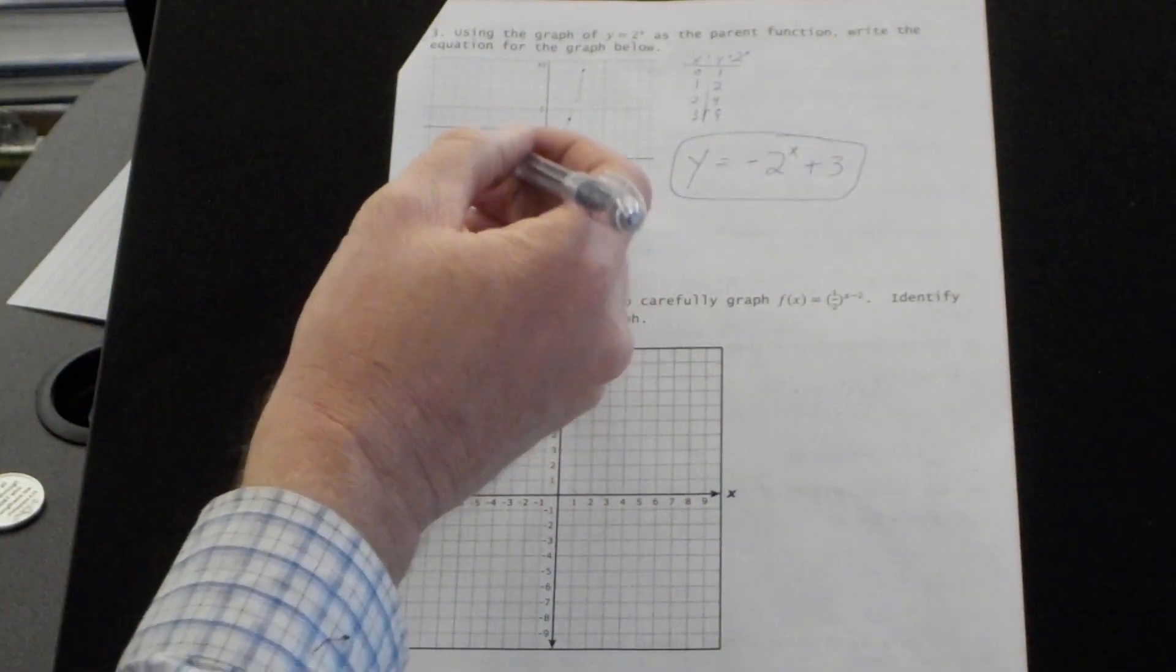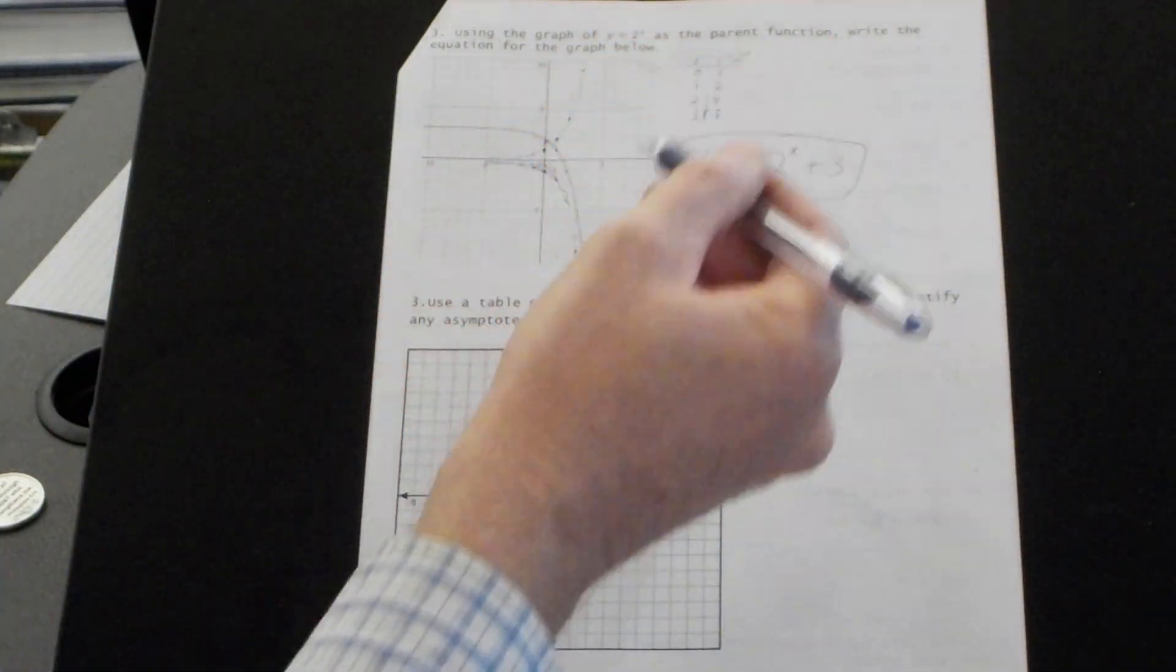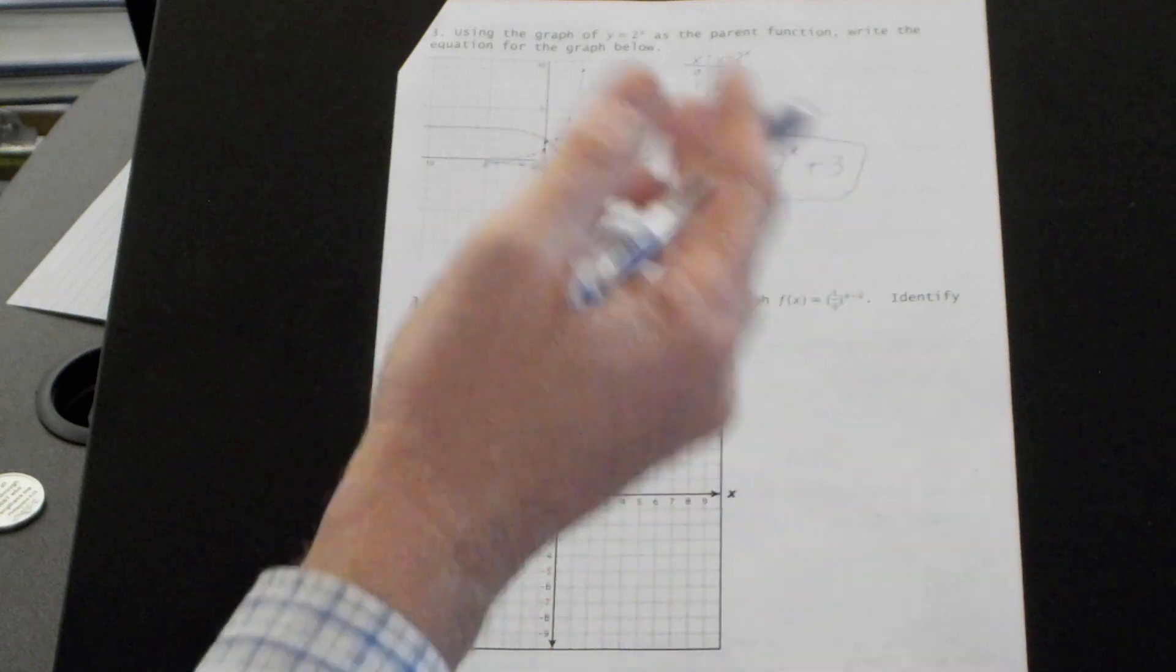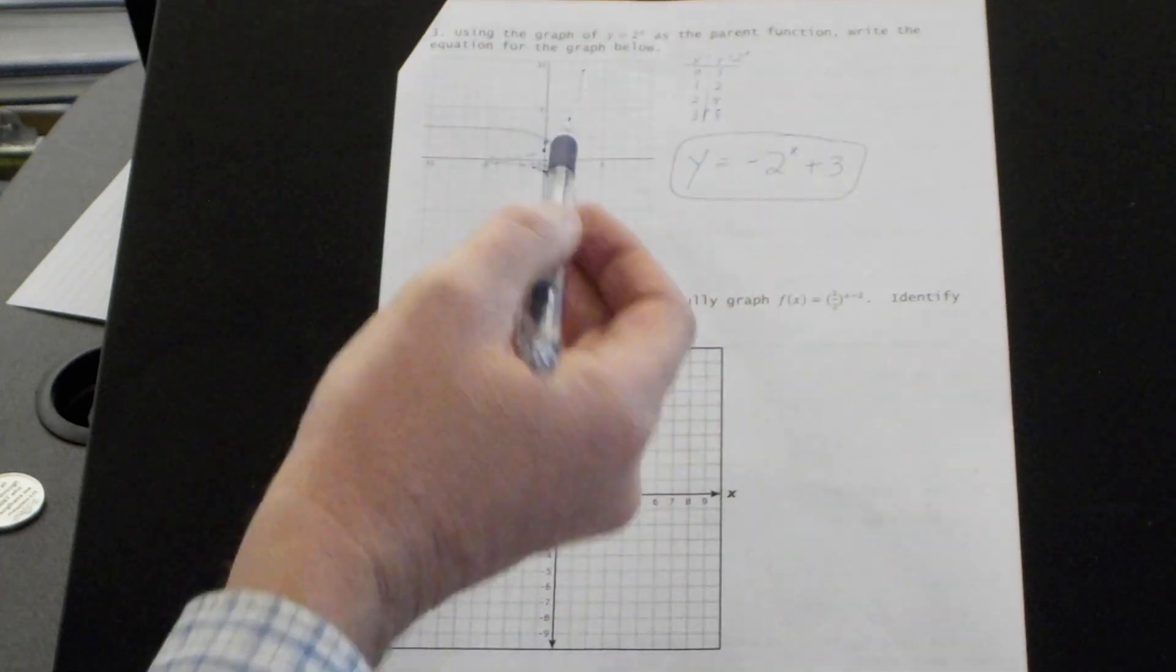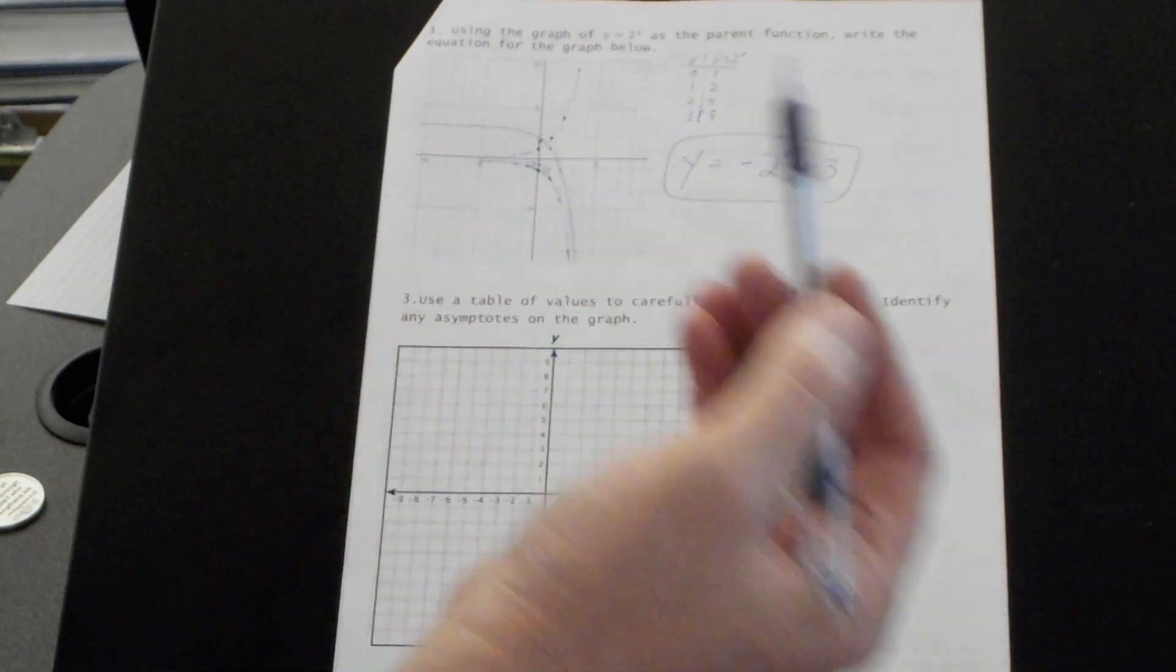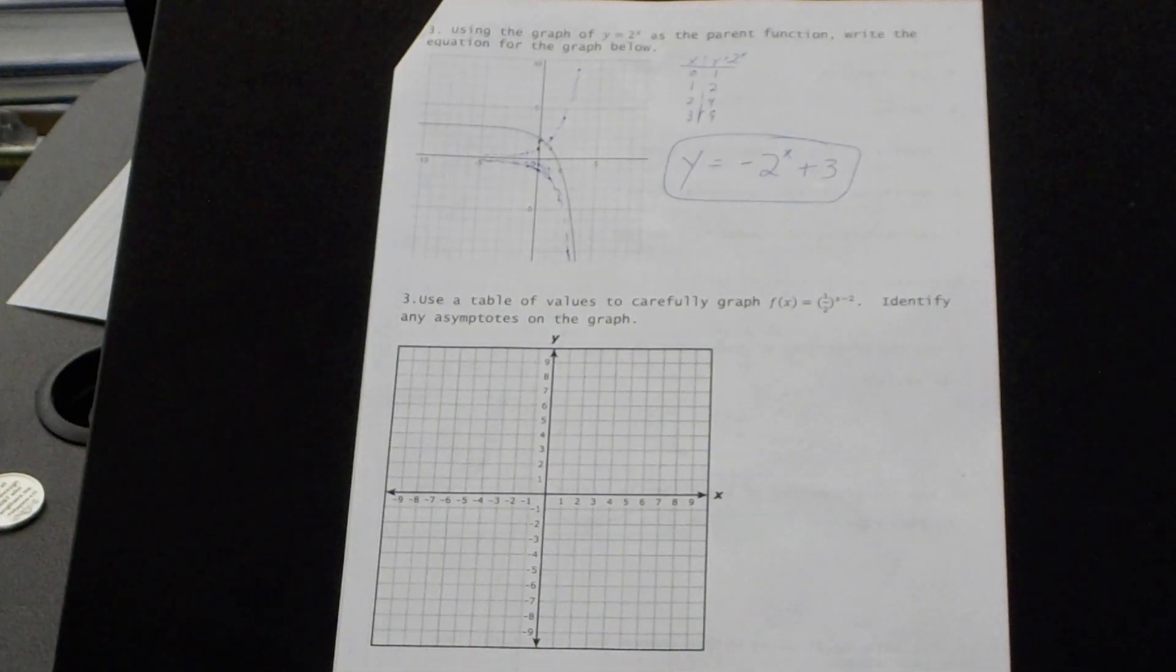So what did I do? I drew the parent graph. Then I reflected it and then just observed how much movement from the reflection happened to there.